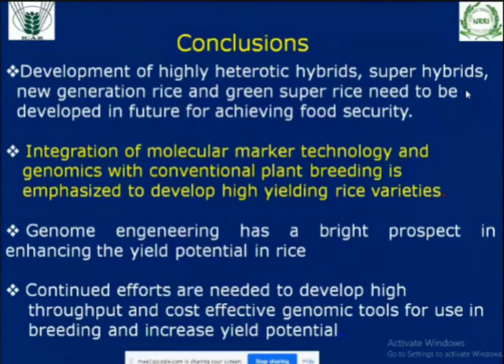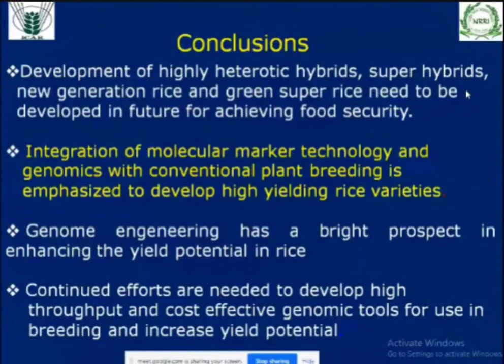In conclusion, development of highly heterotic hybrids is required for feeding the future burgeoning population. Super hybrids and new generation rice can be developed by integrating molecular marker technology with genomics and conventional plant breeding to develop high-yielding rice varieties. Genome engineering has a bright prospect in enhancing yield potential in rice. Continued efforts are needed to develop high-throughput and cost-effective genomic tools for accelerating breeding and increasing yield potential. Thank you very much.